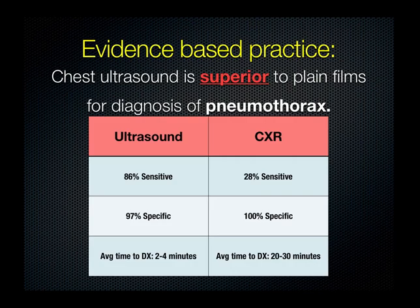It has also been shown that chest ultrasound is superior to plain films for diagnosis of pneumothorax, particularly in the supine patient. Ultrasound is much more sensitive than chest x-ray and similarly specific. A patient with a pneumothorax in the supine position has anterior air, so a chest x-ray is not likely to show you a pleural line. The average time to diagnosis of pneumothorax with ultrasound is just on the order of a few minutes, whereas a significant delay using chest x-ray can impact the patient's management.